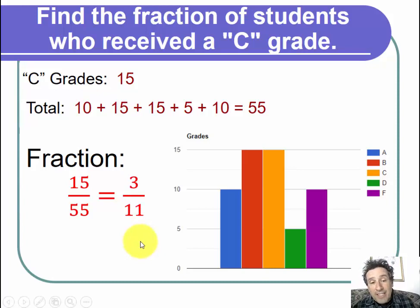So a reduced fraction is kind of cleaner. It doesn't tell the story as well, because we can see that 15 over 55 shows that out of the 55 students, 15 of them received a C.